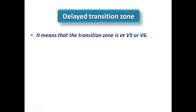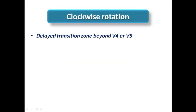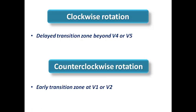This brings us to two more terminologies: delayed transition zone, meaning the transition zone is at V5 or V6, which indicates poor R-wave progression; and early transition zone, in which the transition zone is at V1 or V2. Clockwise rotation simply means delayed transition zone beyond V4 or V5, and counterclockwise rotation means early transition zone at V1 or V2.